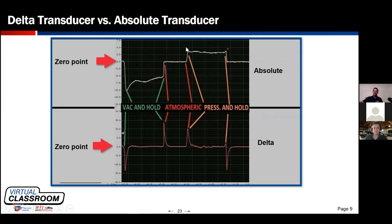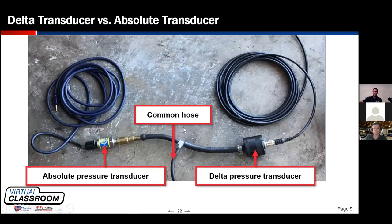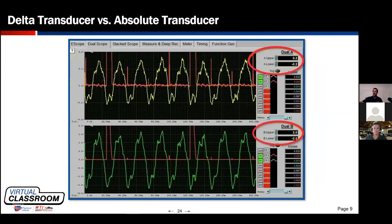Can you see that both transducers are telling the same story — just in different ways? We're going to capitalize on both their abilities and characteristics because they're both valuable. An absolute transducer gives us accuracy — the numerical pressure value. But a delta transducer is extremely sensitive. In fact, if you coupled it through a hose with a funnel and pointed it toward someone talking in class, you could actually see the voltage transitions on the scope screen from the pressure changes in the sound waves — that's how sensitive it is.